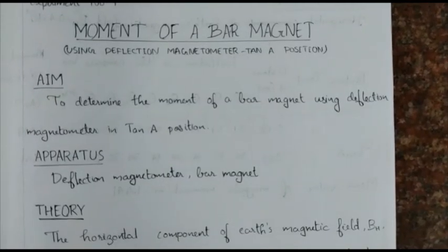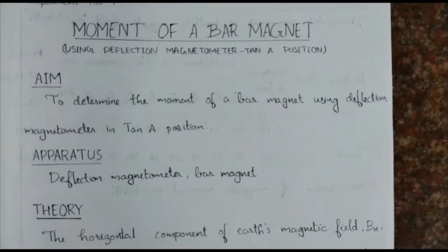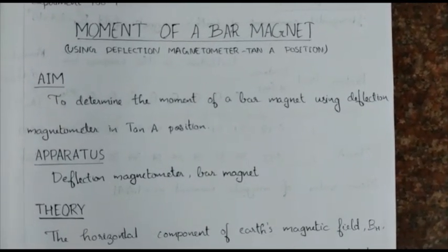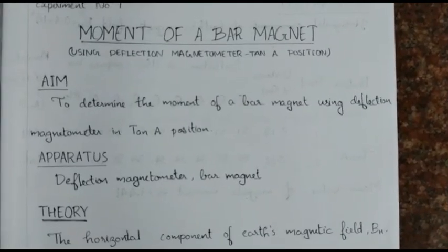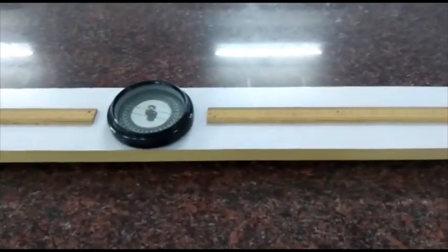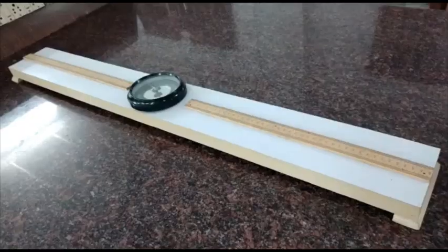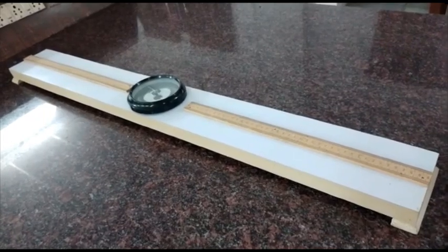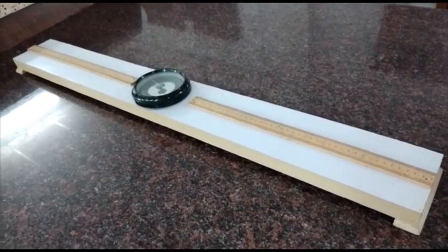Here we are going to perform the experiment to find the moment of a bar magnet using deflection magnetometer. This is the bar magnet whose moment is to be determined using this deflection magnetometer. The deflection magnetometer contains a compass box which is mounted on a wooden board.